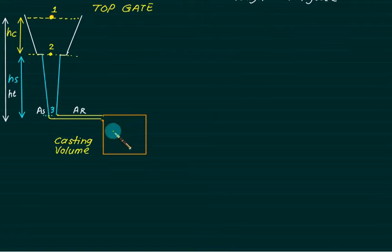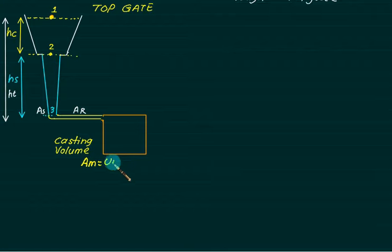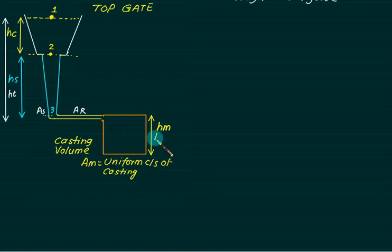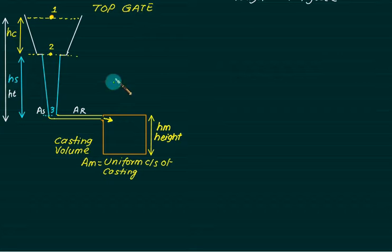Let us assume that this casting has uniform cross section AM, and the height of casting is HM. The liquid will fall from this side. In the top gate, we are interested in how much time is required to fill this — we are interested in filling time.